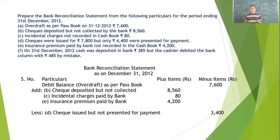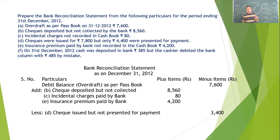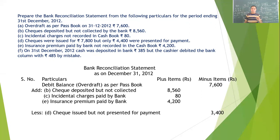On 31st December 2012, cash deposited into the bank was rupees 385, but the cashier debited rupees 485 by mistake. So in the cashbook, rupees 100 extra are debited, meaning the balance of cashbook is rupees 100 more. To correct this in the passbook balance, we will also add it — so it goes to the add side.